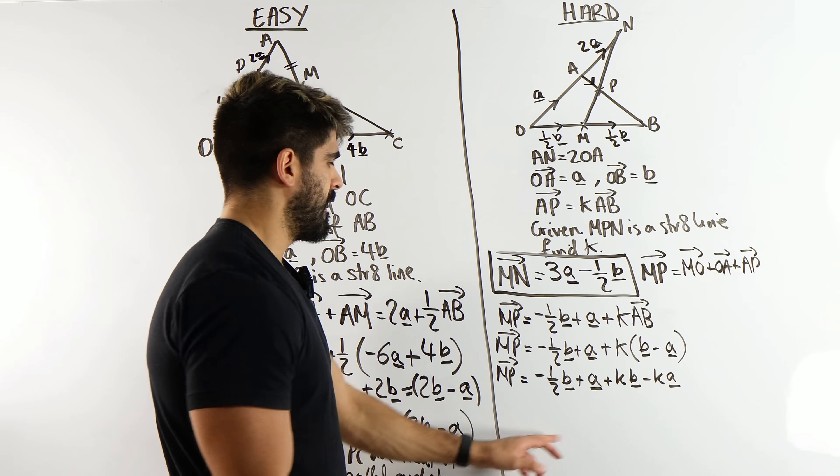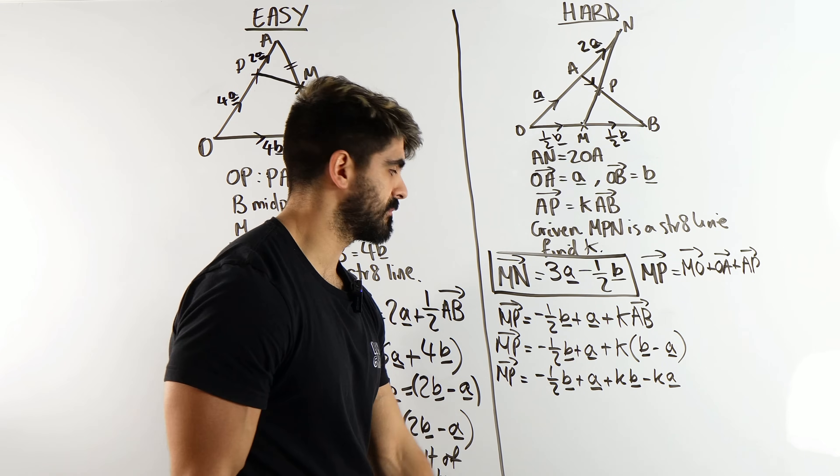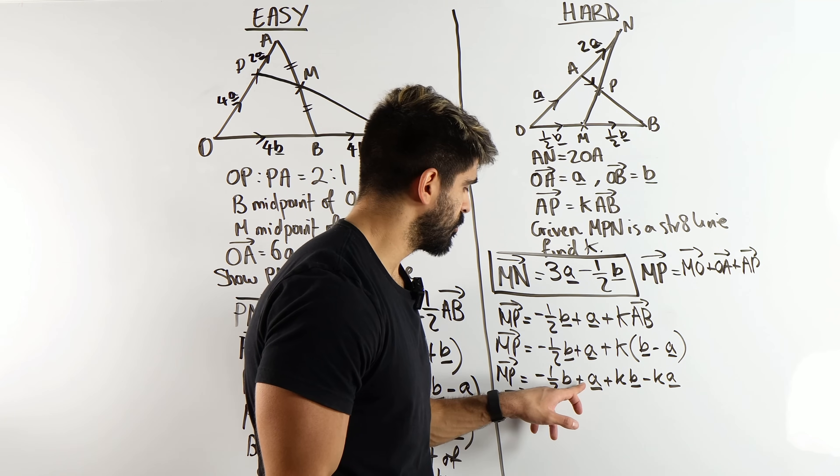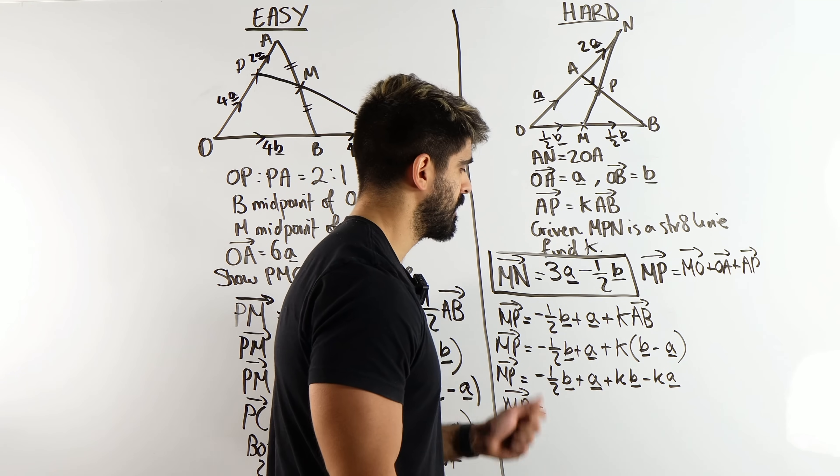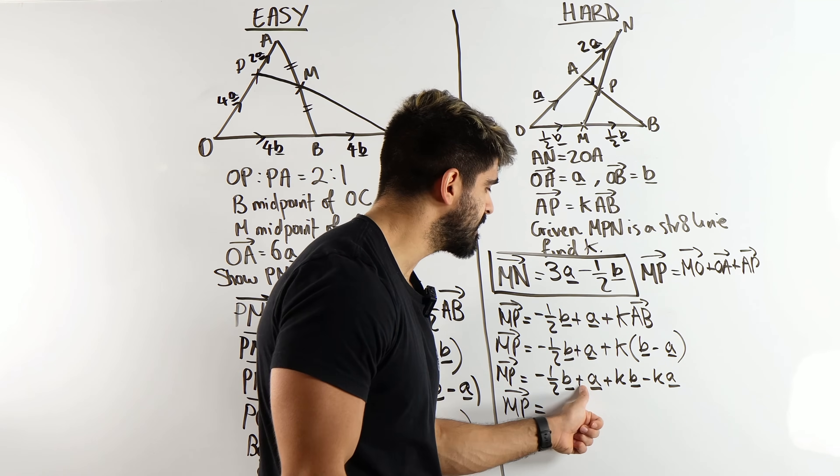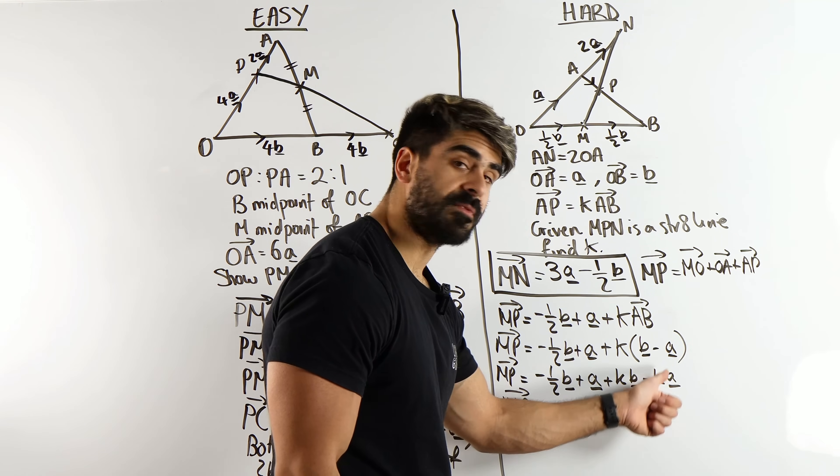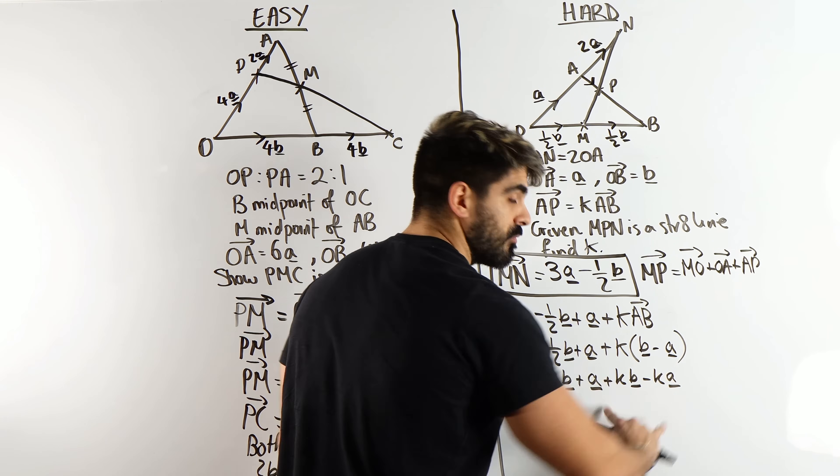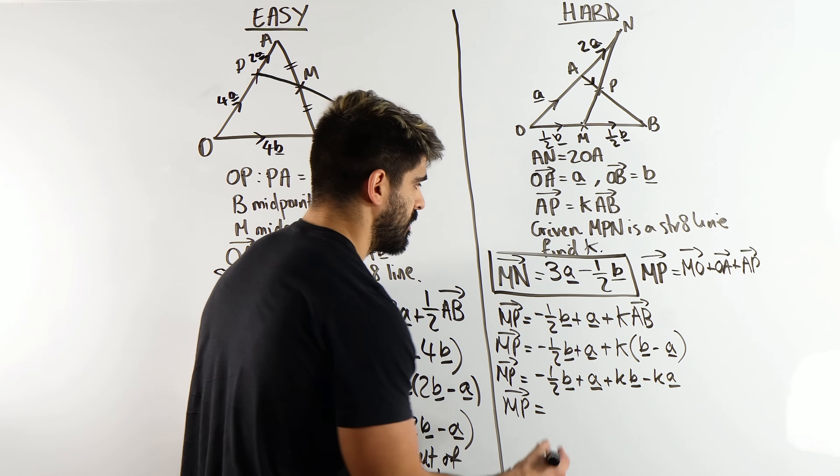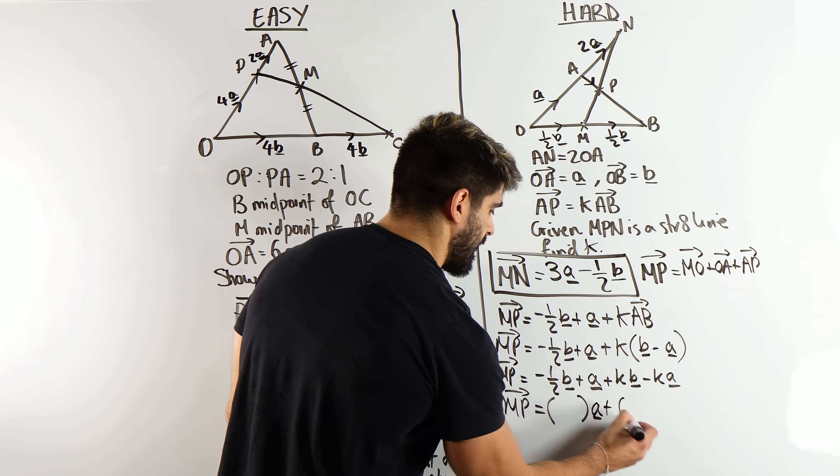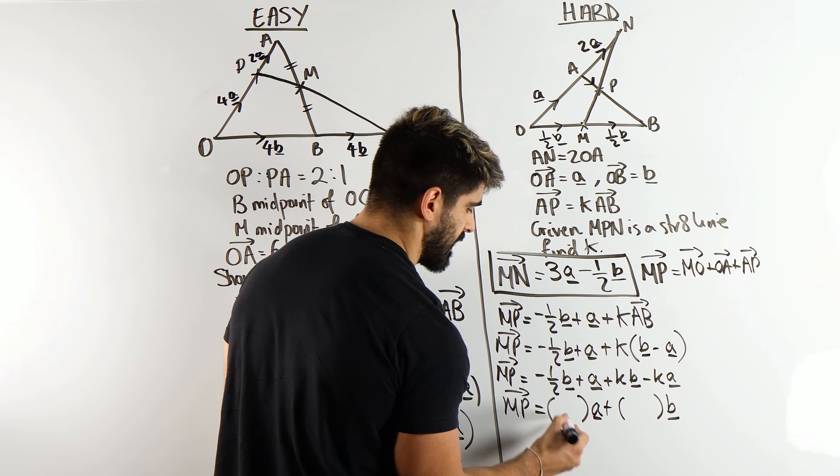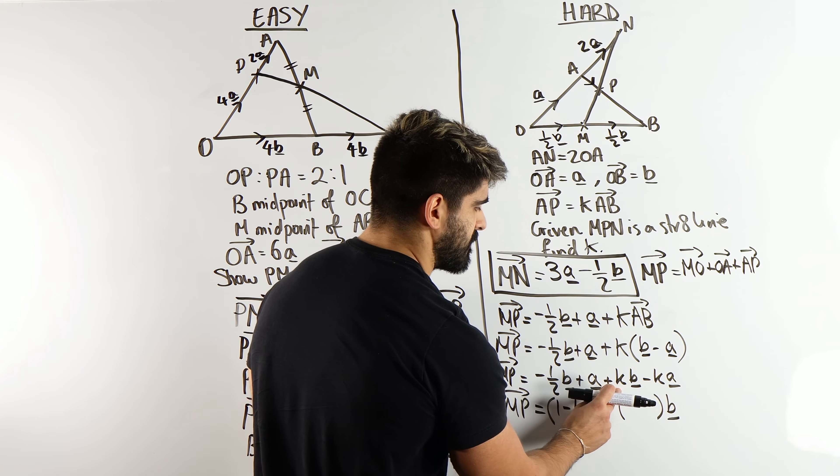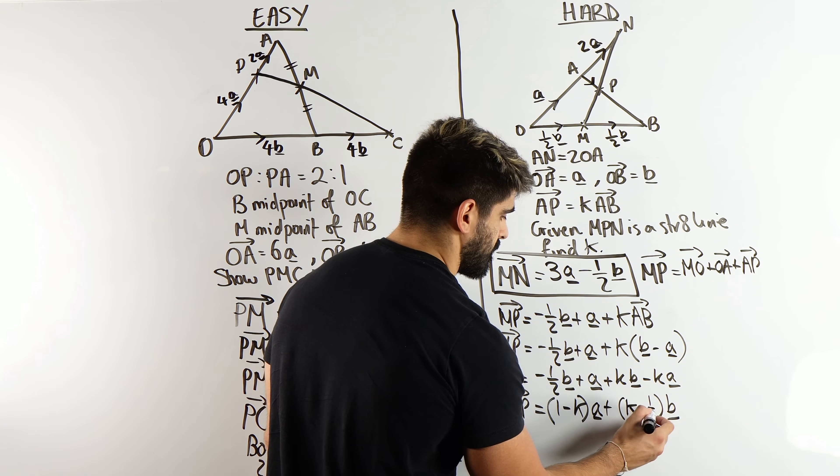Now this looks weird. We need to collect the like terms. How do we do that? It's very simple. Imagine k was 5. You would do 1A minus 5A. 1 minus 5 is minus 4. What you're doing is you're reading the coefficients. You're doing 1 minus 5A. You're saying 1 minus 5A. You're writing the A once. This is exactly what we're doing here as well. We are factorizing and saying what's the overall coefficient of A and what's the overall coefficient of B. For A, it's 1 minus k. And then for B, you have minus a half and then you have k. I'm going to write the positive one first. k minus half.